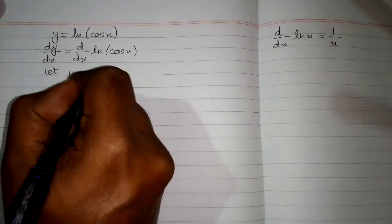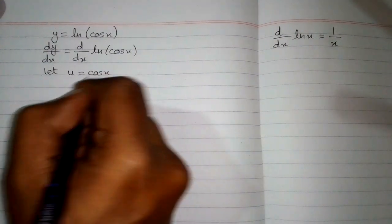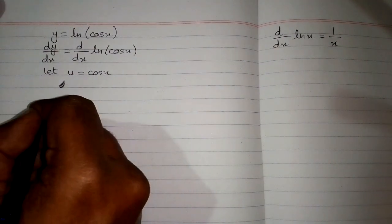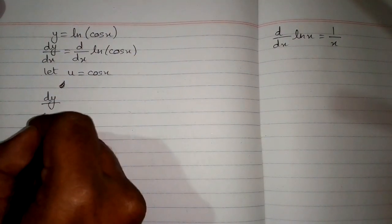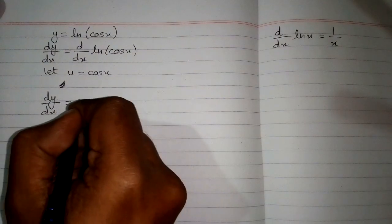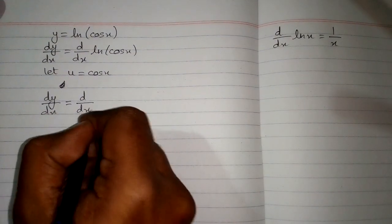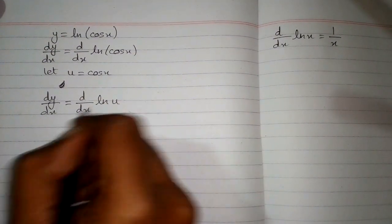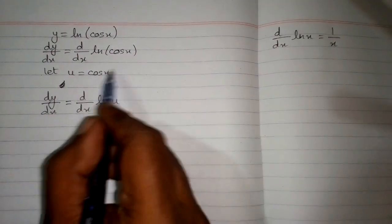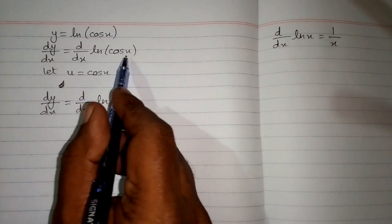So suppose u is equal to cosine of x. So the derivative dy by dx is equal to d by dx of ln of u. Now we put the value of u over here in place of cosine of x.